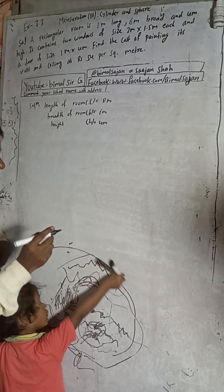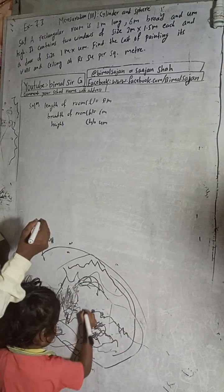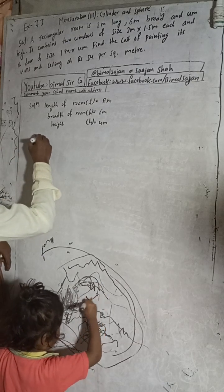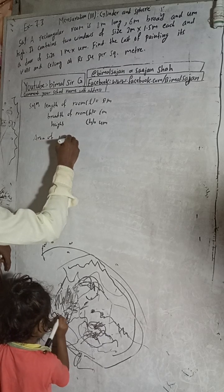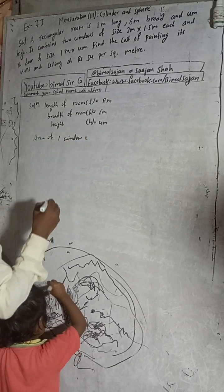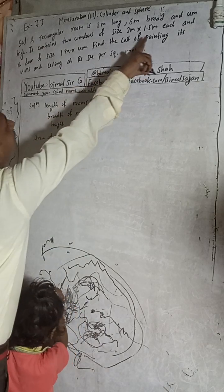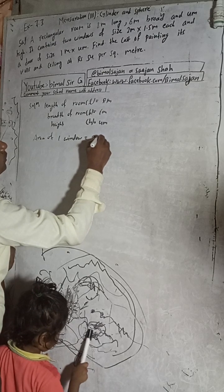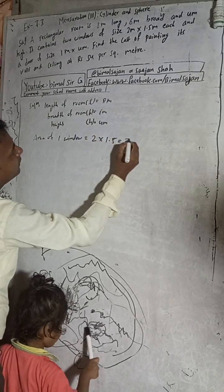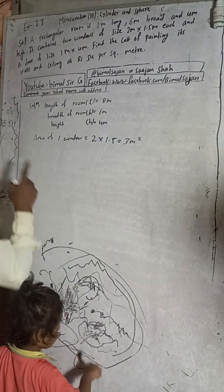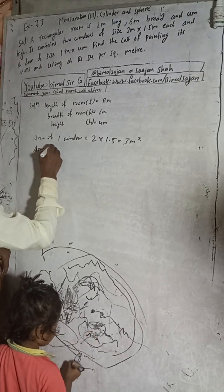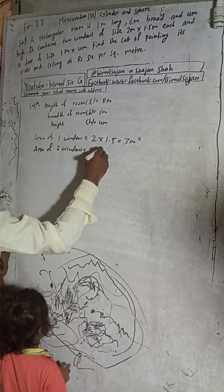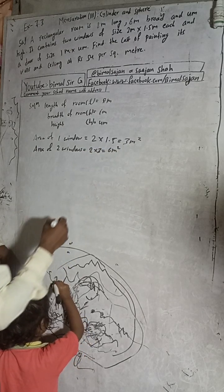It contains two windows. Area of one window - the size of each window is 2 meters by 1.5 meters, so area is 2 into 1.5, this is equal to 3 meter square. But there are two windows, so area of two windows is 2 into 3, this is 6 meter square.